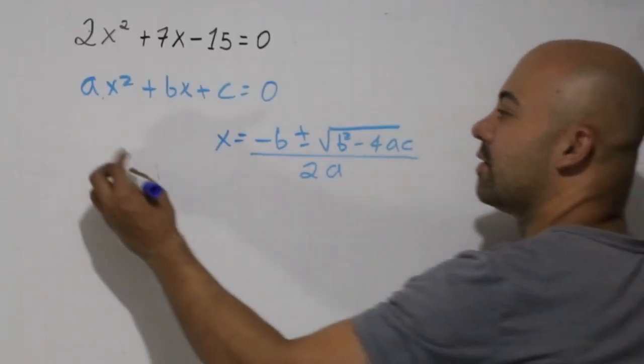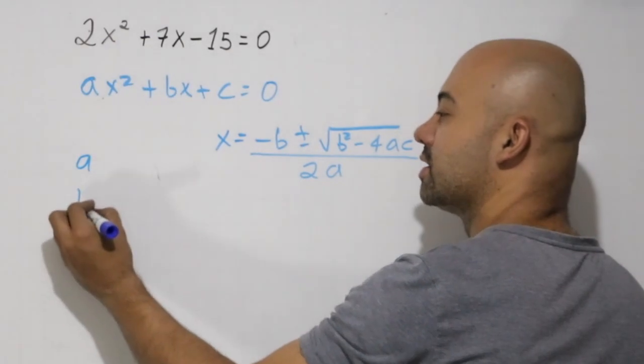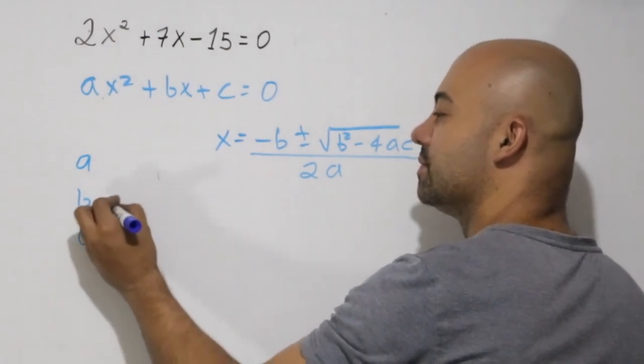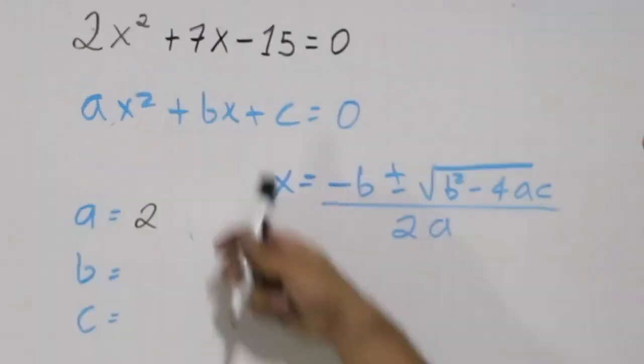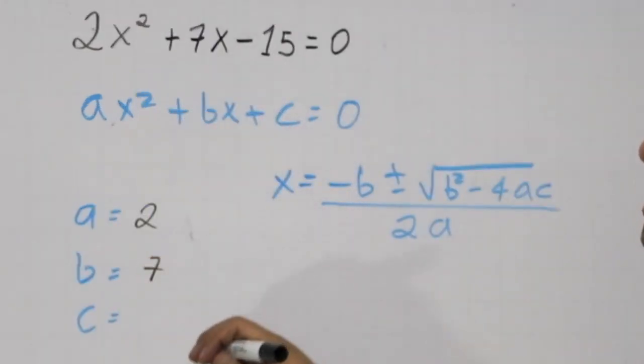As I said before, the equation is already ordered, so this part is going to be really easy. We have a equals 2, b is the number 7, and c is minus 15.